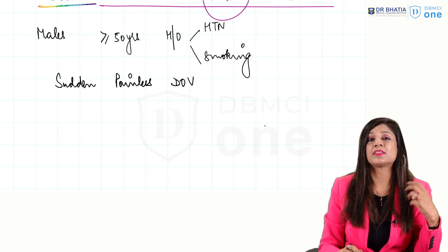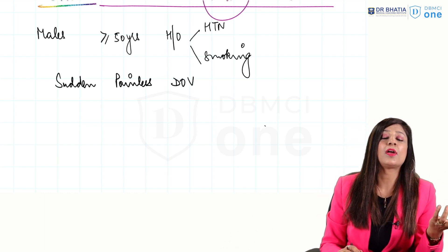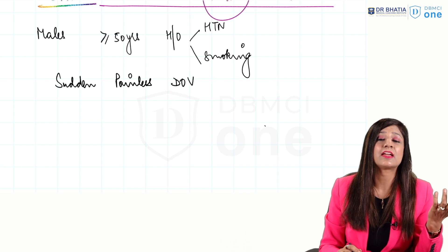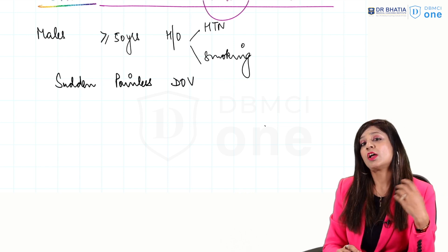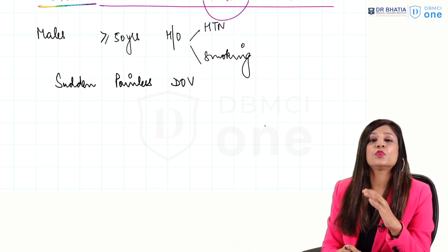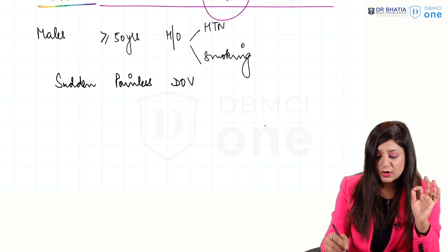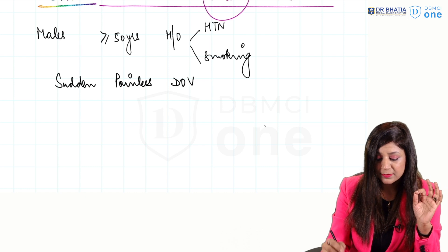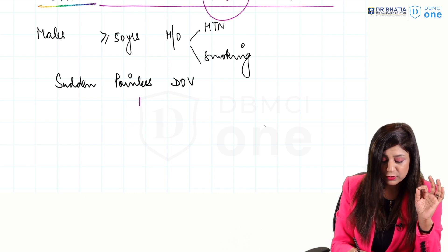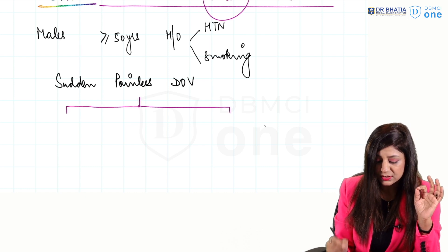To differentiate CRVO from arterial occlusion, always remember that you will never get a cherry red spot in CRVO. Now when we are getting a patient of CRVO, there are basically two types.